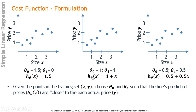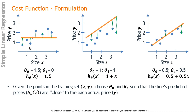We have three copies of the same data, and we're going to show three different lines. What is shown here is the fitting line, and the dotted line shows the vertical distance from that line to the actual data point.